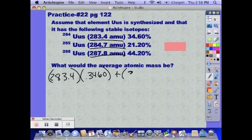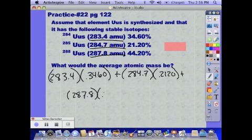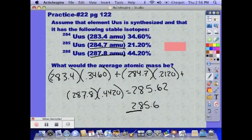Plus our next mass times its percent. Plus our last one. Multiply and sum all those up. And we want to have our answer, well we get 285.62. But everything's in 4 sig figs, so we want to put our answer in 4 sig figs, which gives us 285.6.